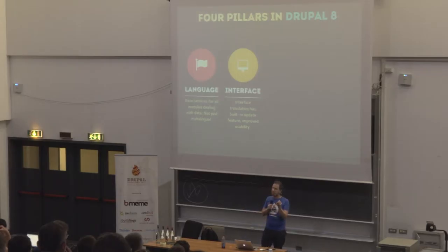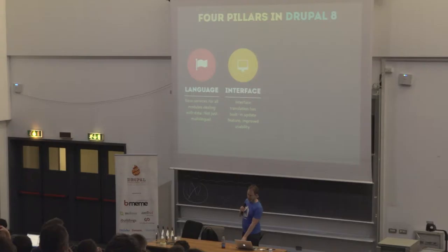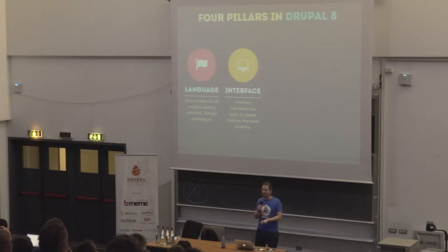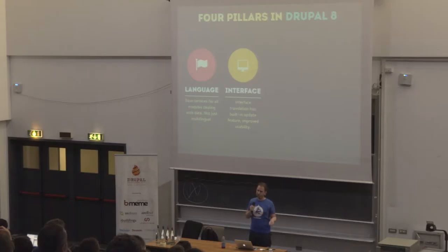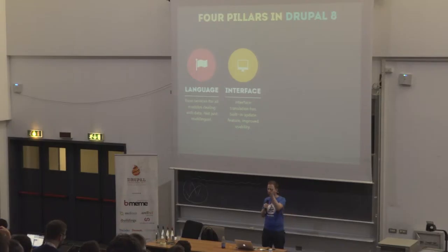We have Interface Translation as a separate module — the successor to the locale module. This provides interface translation for what's built in the software and automates all the translation download stuff we used to have as a separate module in Drupal 7. Interface Translation in Drupal 8 works automatically when you start installing Drupal. The very first screen is 'select your language,' it auto-detects from your browser, downloads translations right away, and every module or theme you download or update will have its translations downloaded and maintained automatically.